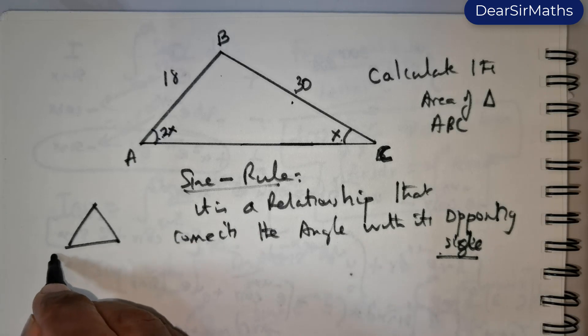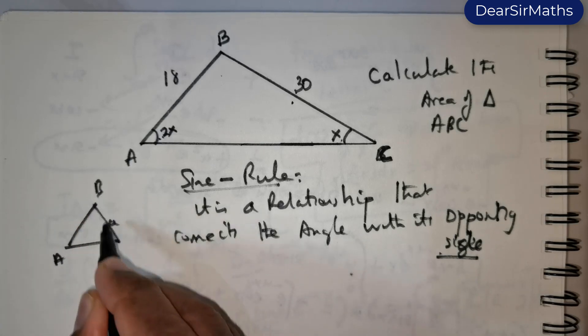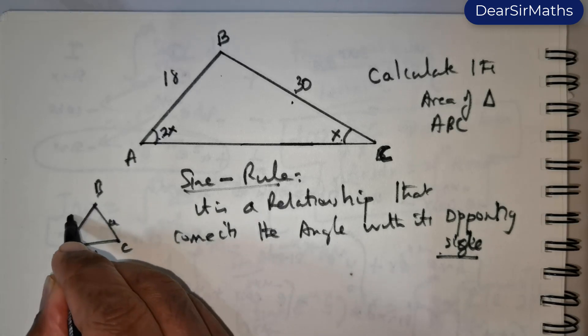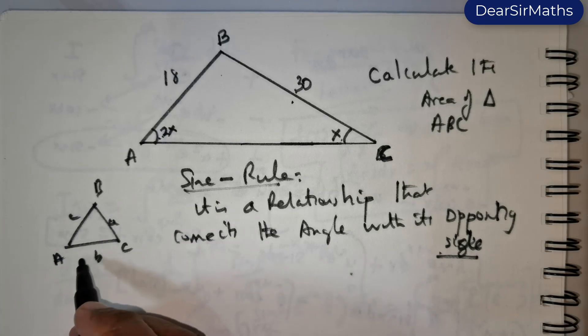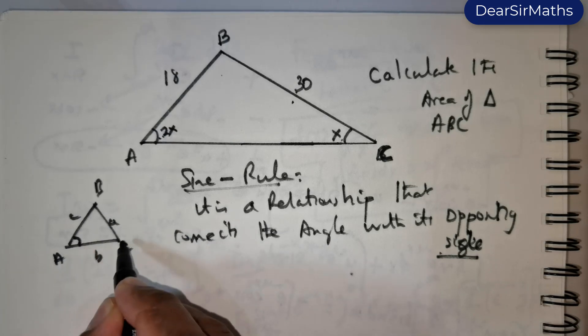Now in brief, suppose you have something of this fashion: say a, a, b, b, and c and c. You can write this in the following fashion. This is angle A, this is angle B, this is angle C.